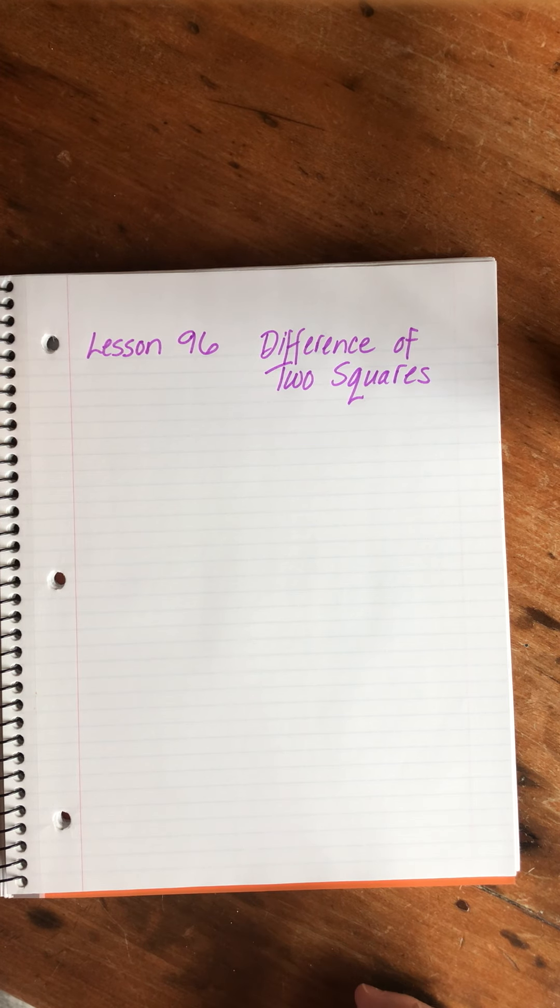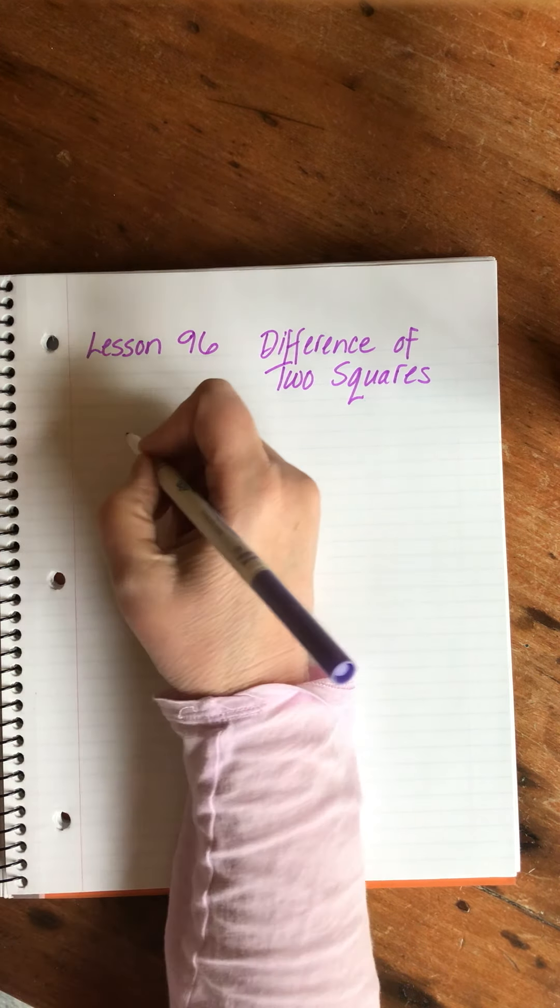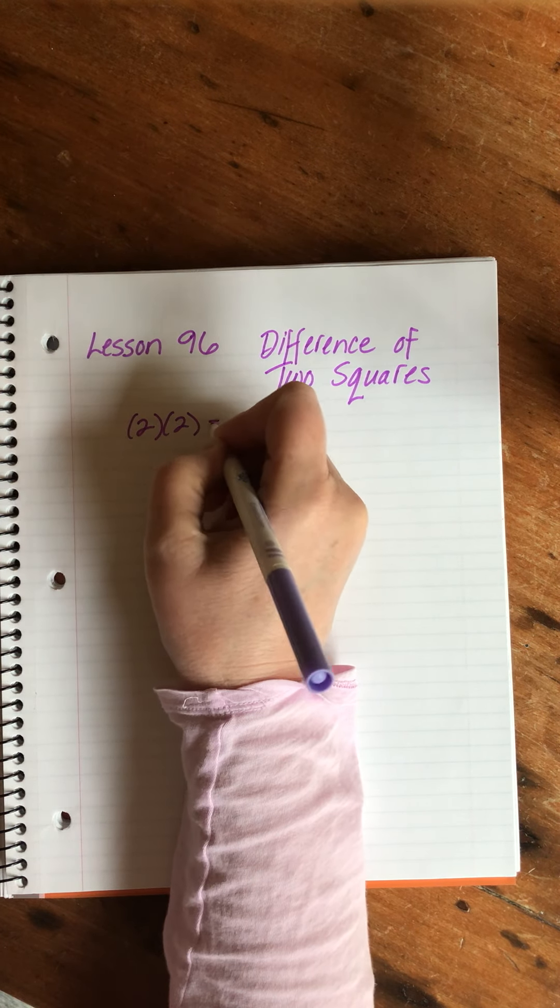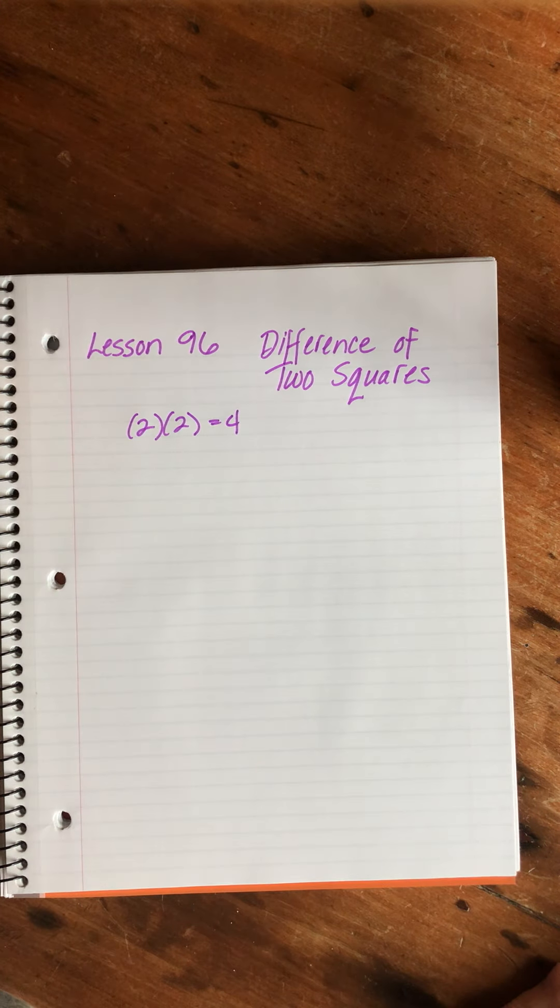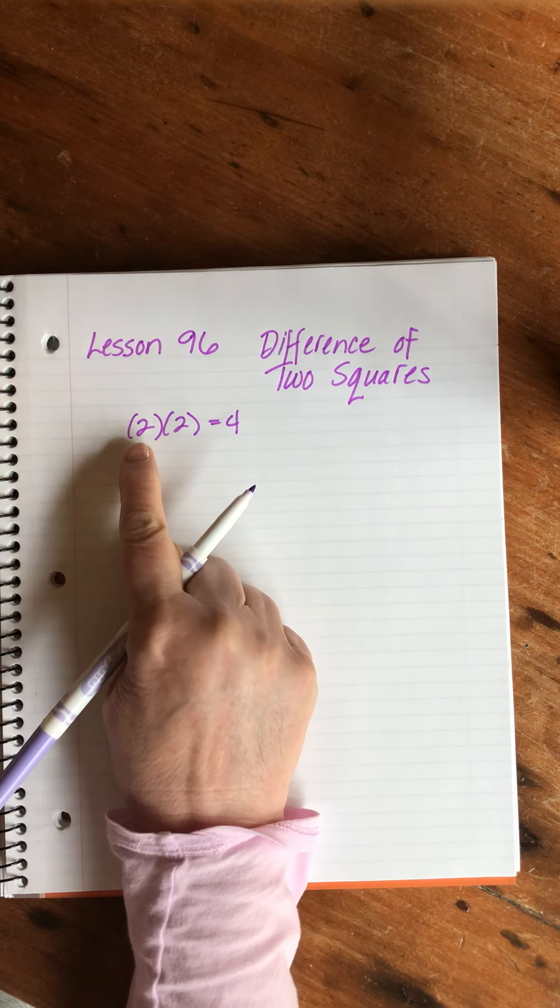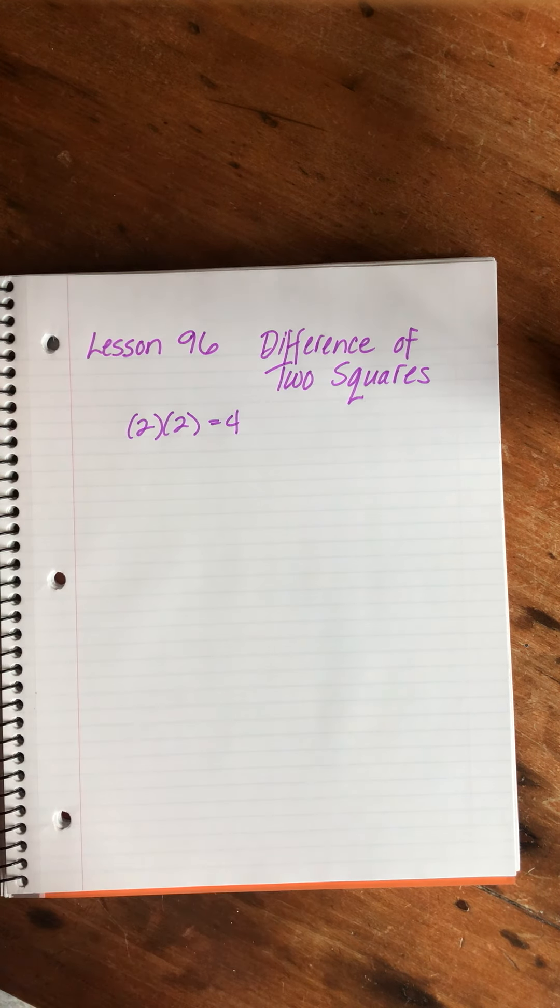We know that two times two is four. That might seem really basic, but I want you to notice those are both positive. We also know that minus two times minus two equals four.